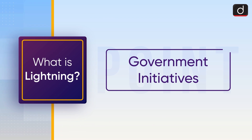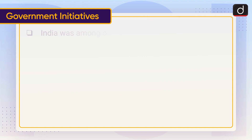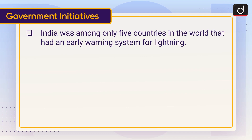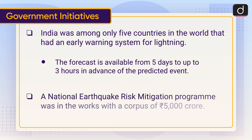Now lastly, let's have a look at the government initiatives. India was among only five countries in the world that had an early warning system for lightning. The forecast is available from five days to up to three hours in advance of the predicted event. A national earthquake risk mitigation program was in the works with a corpus of rupees 5,000 crore.